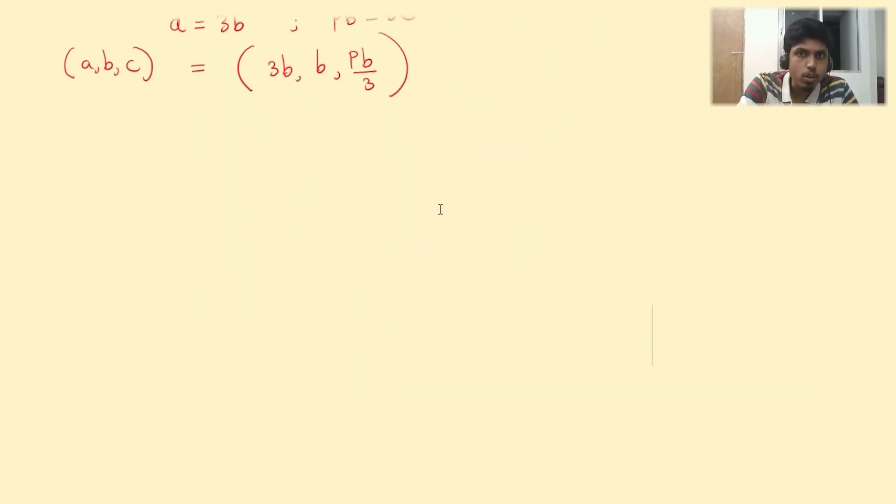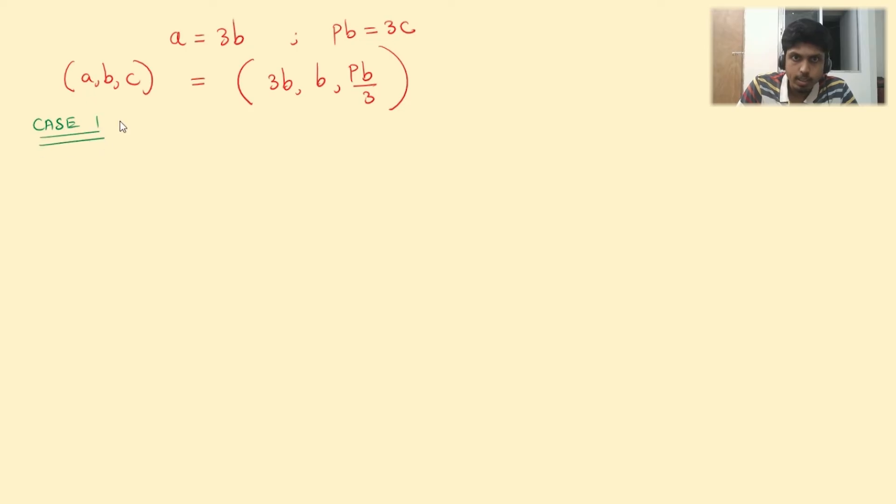So now let's case work on p. Case 1 is that p is less than 9. The reason behind this assumption will be clear later. First, let's be convinced that case work is a better idea here. So p less than 9 implies pb by 3 is less than 3 or in other words pb by 3 is less than 3b.